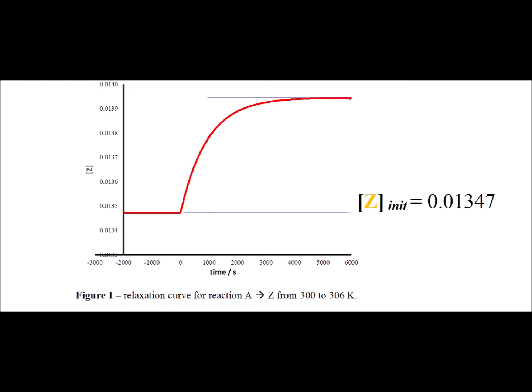Here is a relaxation curve for this experiment. Notice that it starts at 300 degrees Kelvin. The equilibrium concentration of Z is 0.01347. That's the red line all the way at the left. Notice that it is flat, which shows us that during that flat period we are in a condition of equilibrium.